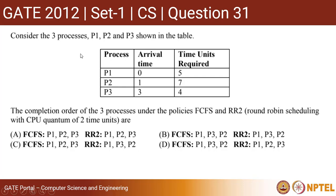Consider three processes P1, P2, and P3. You are given a chart with the arrival time and the time units required by each process. The question asks for the completion order of the three processes under FCFS (first come first serve) and round robin scheduling with a CPU quantum of two time units.